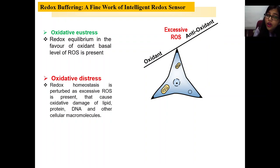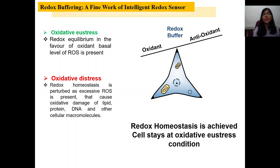But if there is excessive ROS present, then oxidant concentration is much higher than the antioxidant concentration and the antioxidant cannot cope up with the excess ROS, so the damage happens. But if we introduce redox buffering, it will balance the antioxidant and oxidant concentration and maintain redox homeostasis so the cells stay at oxidative eustress condition.